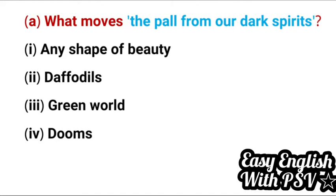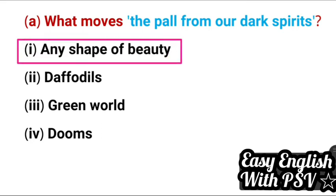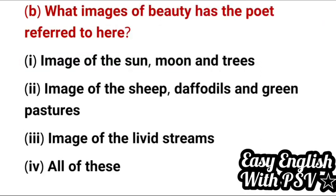Now, questions. Remember, in each extract you will get four questions worth four marks each in your examination. Question 1: What moves the pall from our dark spirits? Note that 'pall' here means 'cloud of sadness'. Options: any shape of beauty, daffodils, green world, dooms. Correct answer: any shape of beauty clears the pall from our dark spirits.